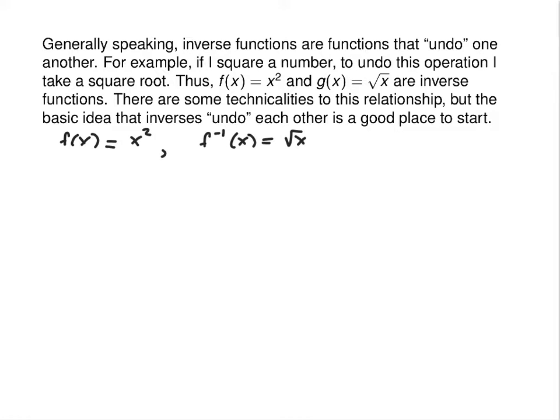What would the inverse function of 3x be? One-third x. You multiply a number by 3, you undo that by dividing that number by 3. And doing those repeated operations is an example of function composition — you do one thing and then do something else to the answer that you got.